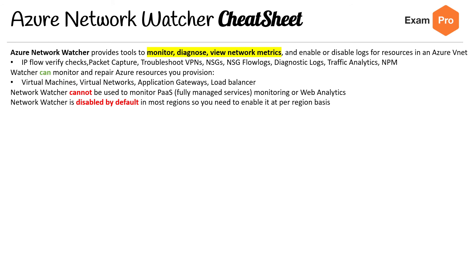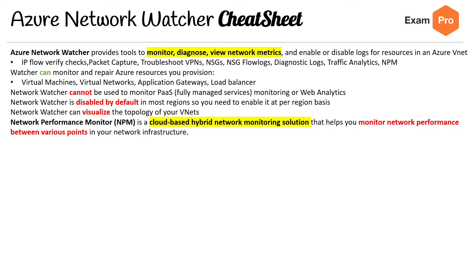Network Watcher is disabled by default in most regions, so you need to enable it on a per-region basis. Network Watcher can also visualize the topology of your VNets.